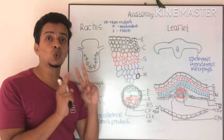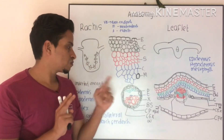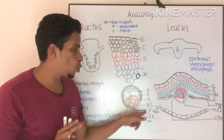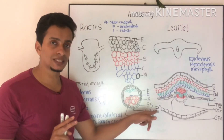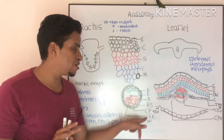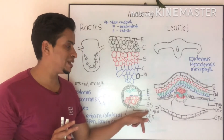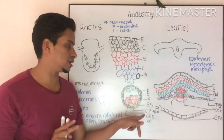One peculiarity is there: you can see two types of xylem — both centripetal xylem and centrifugal xylem. Centripetal is abbreviated as CPX.